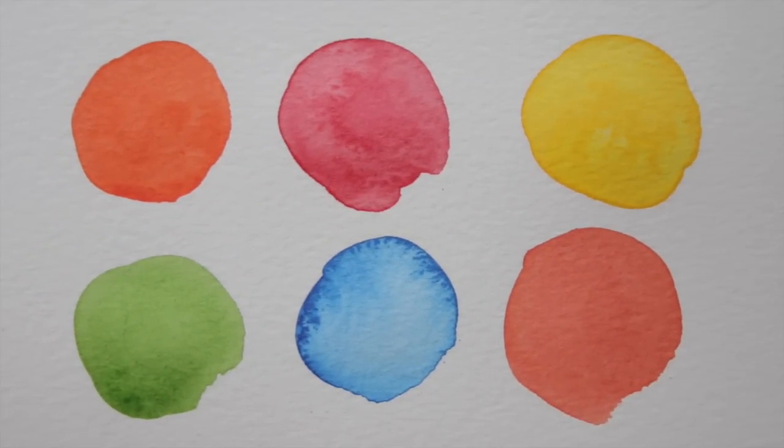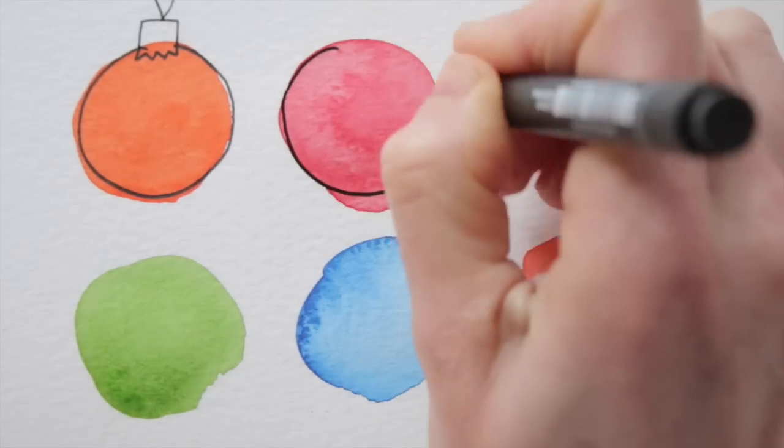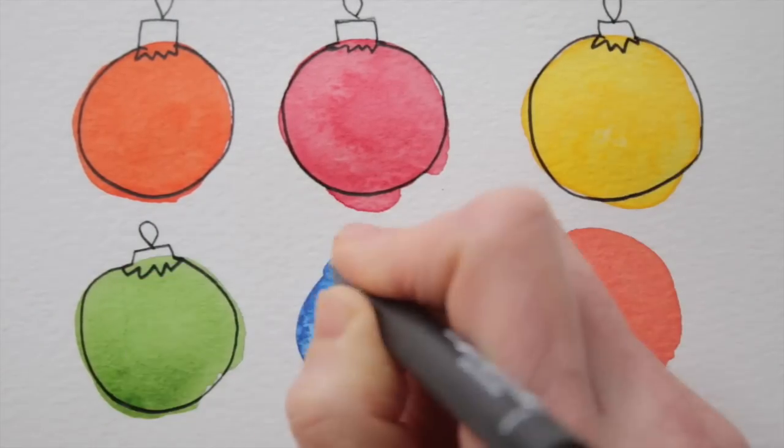Now let the paint dry well, and then pick up your pen and draw a circle around them and a little crown. There you go, you drew Christmas decoration balls.